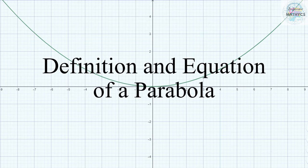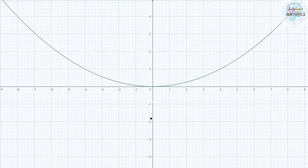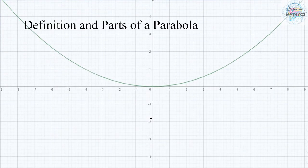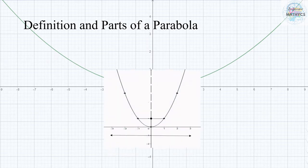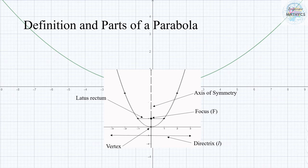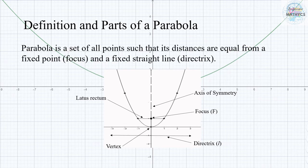Definition and equation of a parabola. A parabola is a set of all points such that its distances are equal from a fixed point or focus, and a fixed straight line or directrix.